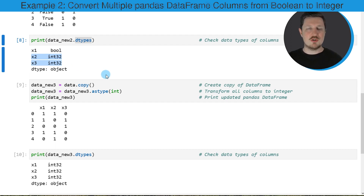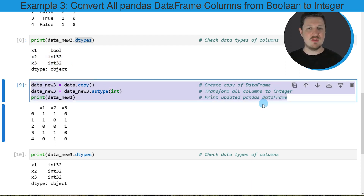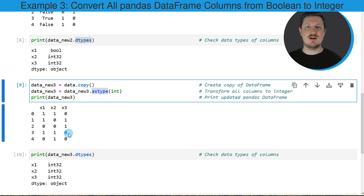We can also convert all the columns of a DataFrame to another data type, as you can see in the next example in the ninth code box. In these lines of code, I'm using once again the astype function. However, this time I'm not specifying any specific columns, but I'm applying this function to the entire dataset. So as you can see below this code box, all the columns in our DataFrame have been converted to the integer data type.